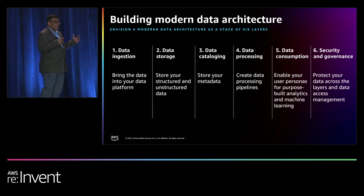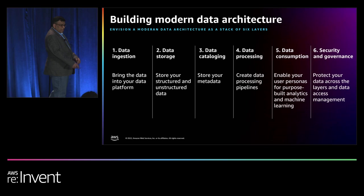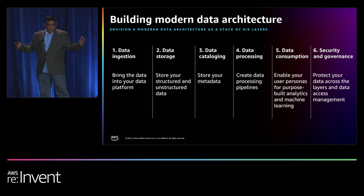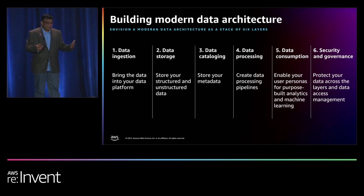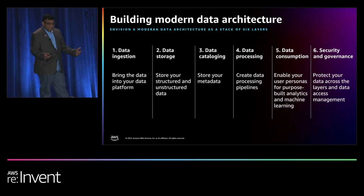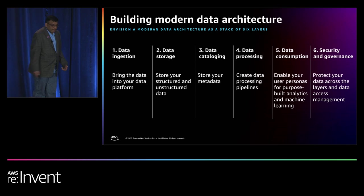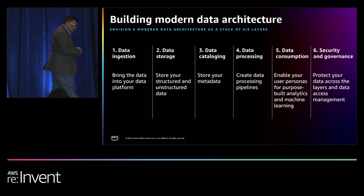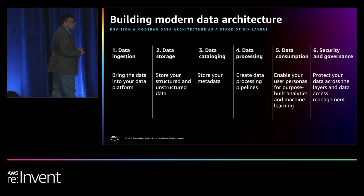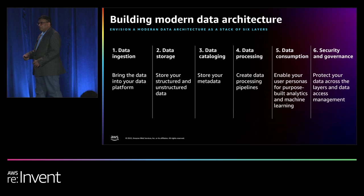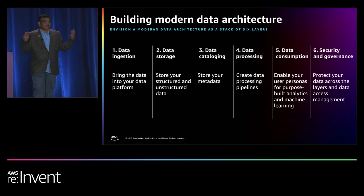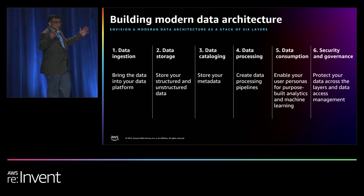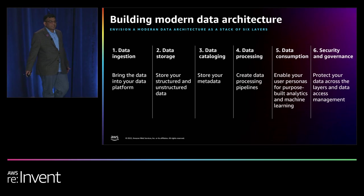Building blocks for modern data architecture is a layered architecture. Envision modern data architecture as a stack of six layers: Data ingestion layer — bring the data into your data platform. You can ingest data into your storage layer using AWS Database Migration Service, AWS Lake Formation blueprints, and AWS Glue. You can also use either Amazon Kinesis Data Streams or Amazon MSK to ingest streaming data into your storage platform. They are both designed to build streaming data architectures on AWS.